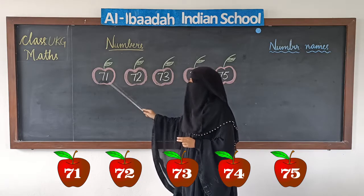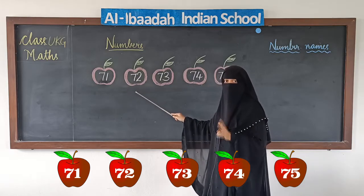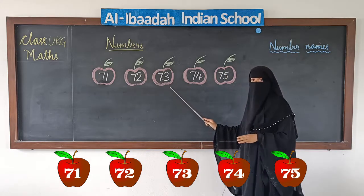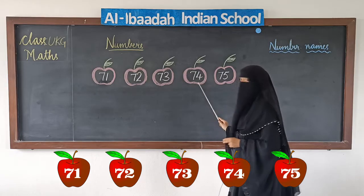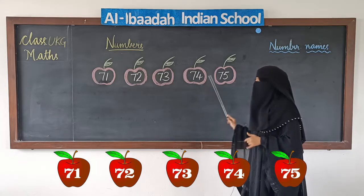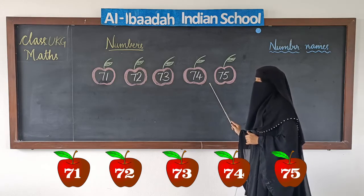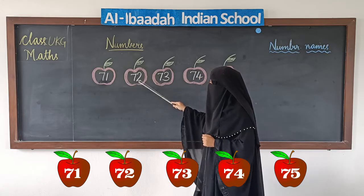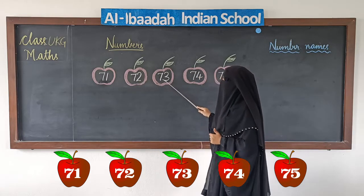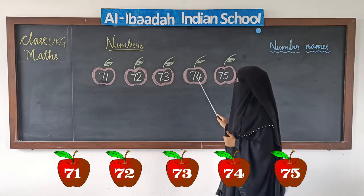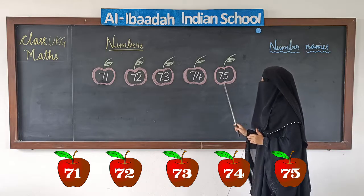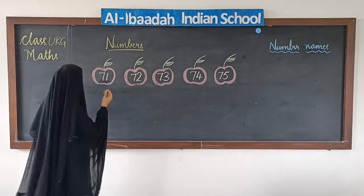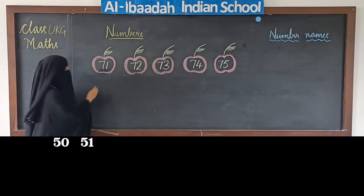Again: 71, 72, 73, 74, 75. Children, we have learnt numbers from 51 now.